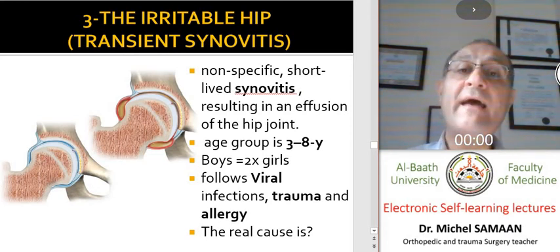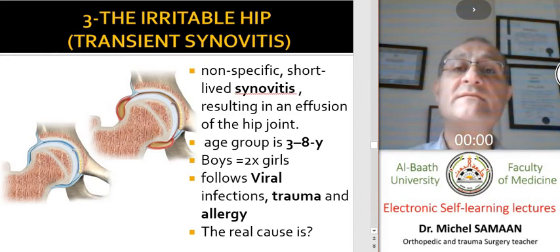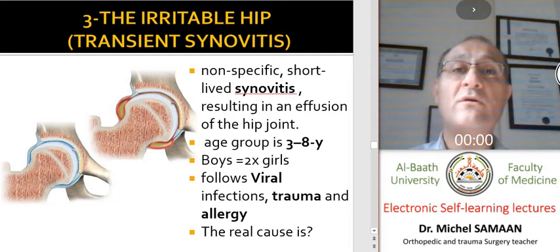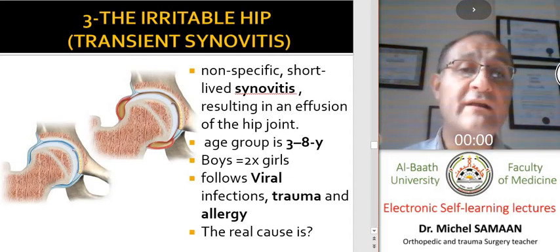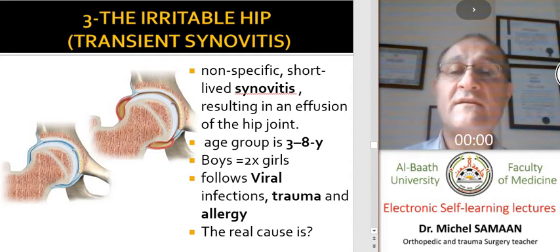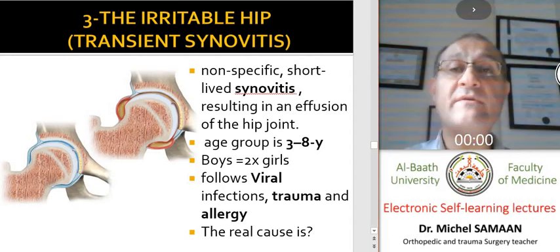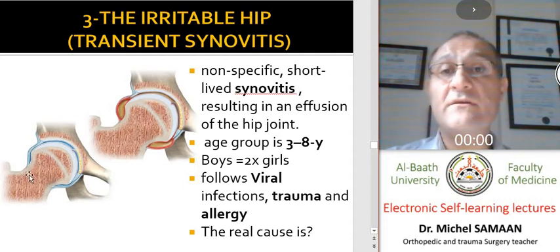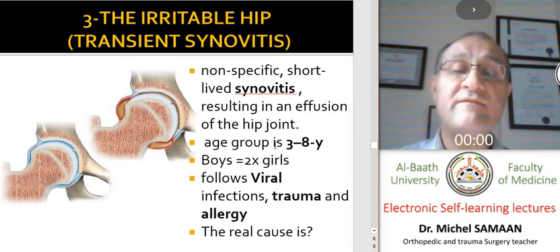In children, we may have a situation that resembles hip joint infection but is not an infection — it is the irritable hip, or transient synovitis, known in French as 'rhume de la hanche.' The cause is not well known, but it appears to be an allergic reaction following a viral infection, or due to trauma or other allergy — a type of synovitis of the hip in children.